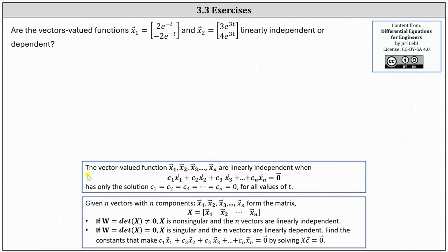Looking at the notes below, first we have: the vector valued functions x1 through xn are linearly independent when c1 times x1 plus c2 times x2 all the way through plus cn times xn equals the zero vector has only the solution c1 equals c2 all the way through cn equals zero for all values of t.